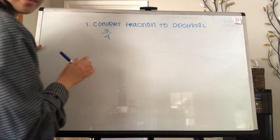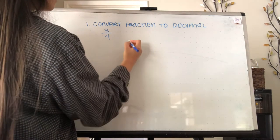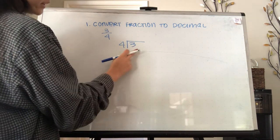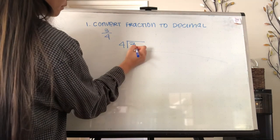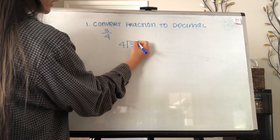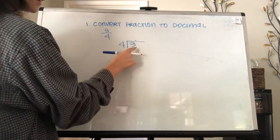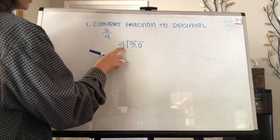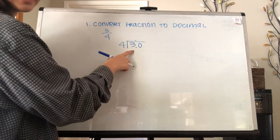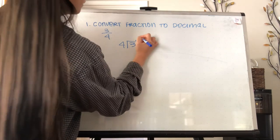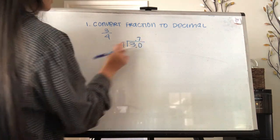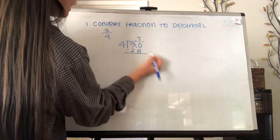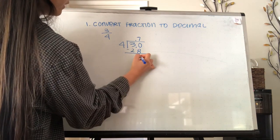In order to convert that to a decimal, we have to divide it. So 3 goes on the inside, 4 on the outside. Since 4 can't go into 3, we're going to have to add the decimal point and then move it up. And then after moving the decimal point, we can add a 0. So 4 goes into 30 seven times, and 4 times 7 is 28. So you subtract that, and you're going to end up with 2.